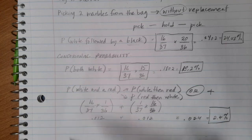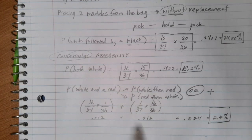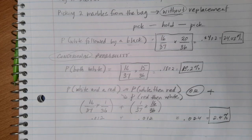So this idea again with conditional probability — think about whether the second pick ends up being affected by the first pick. One application where this concept of without replacement and conditional probability can come into effect again is with cards. Let's look at some specific playing card examples in our next video.